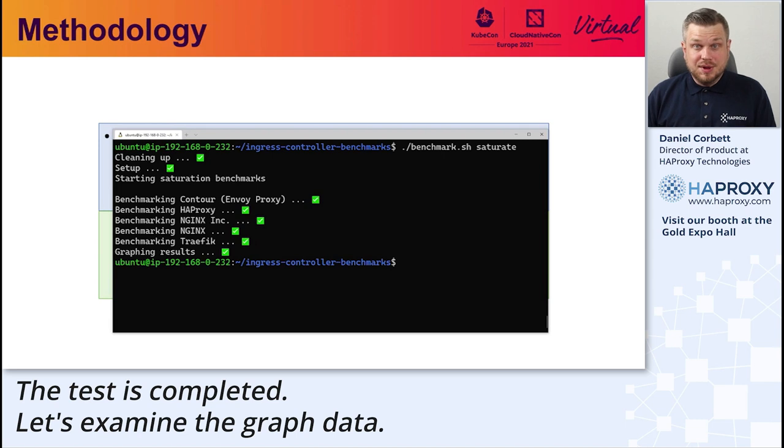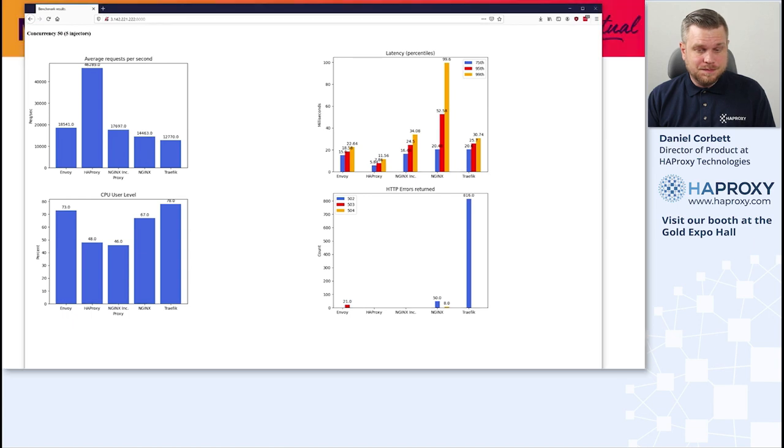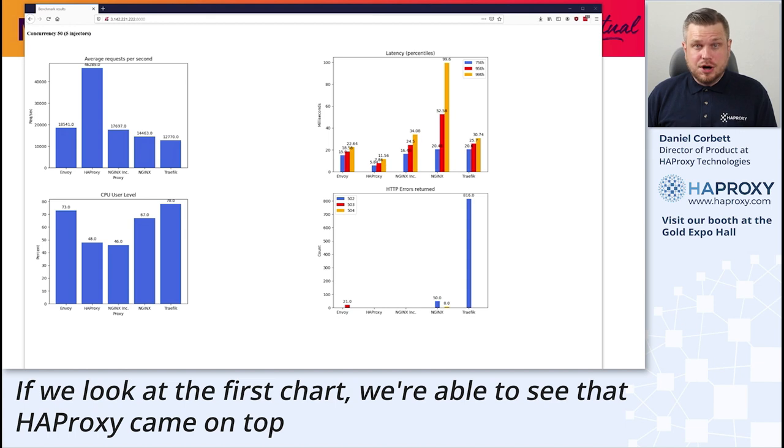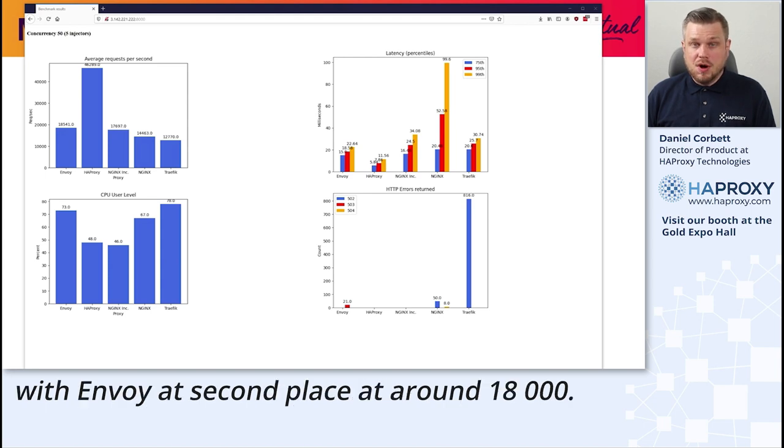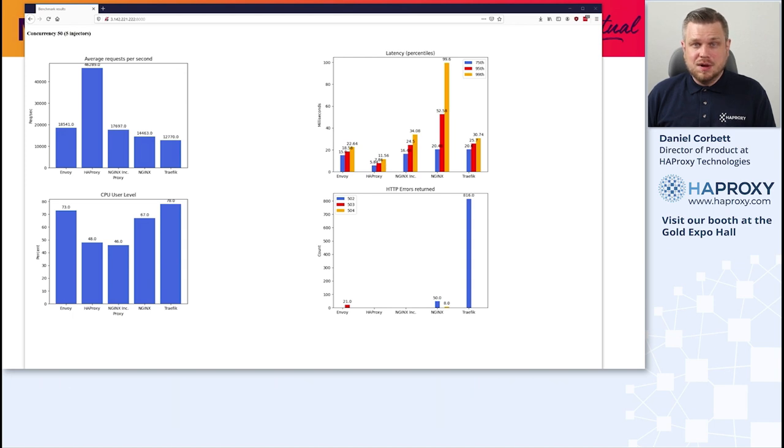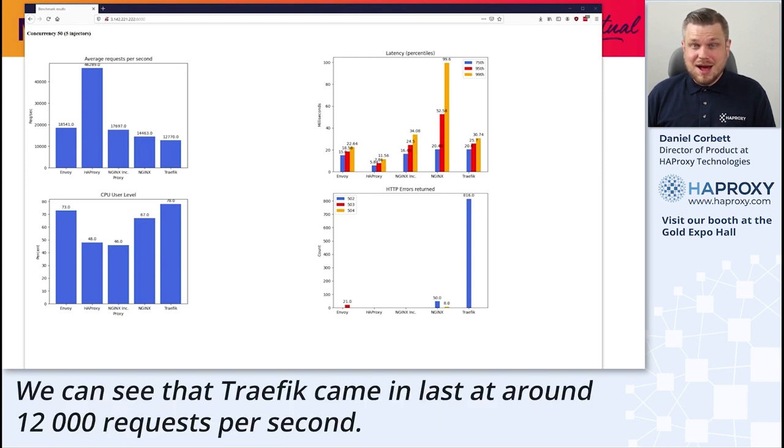The test is completed. Let's examine the graph data. If we look at the first chart, we're able to see that HAProxy came on top, averaging approximately 46,000 requests per second, with Envoy in second place at around 18,000. We can see that Traefik came in last at around 12,000 requests per second.